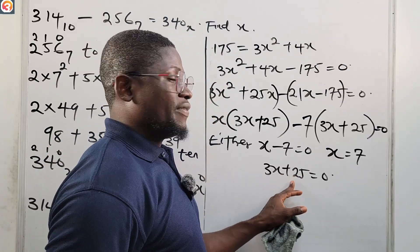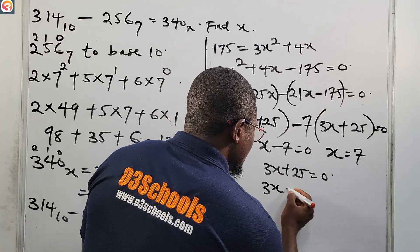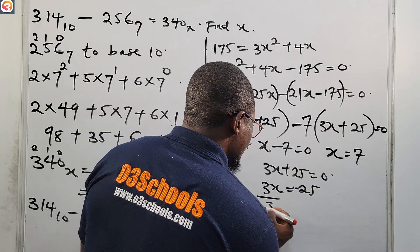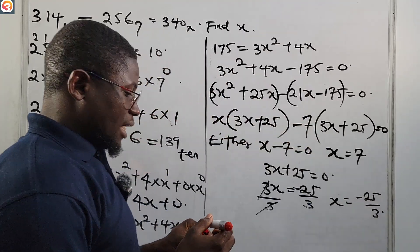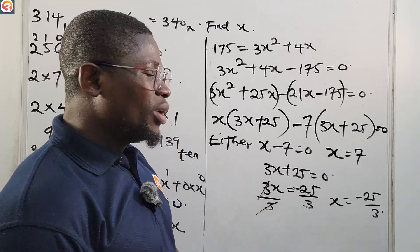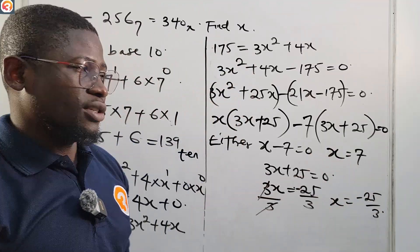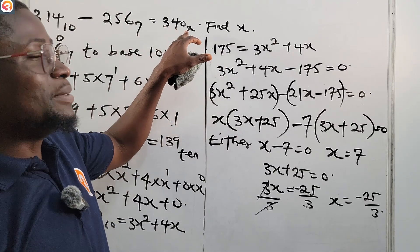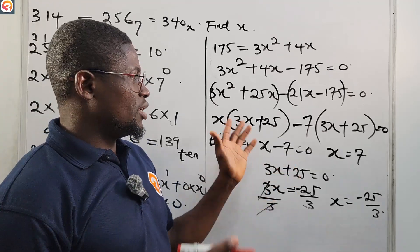Now, have you ever seen a negative base? We have never seen a negative base before. That means the only viable answer is x equals 7. This is our correct answer — so the value of x is 7. It is actually 340 base 7. That was the most interesting part of the solution.